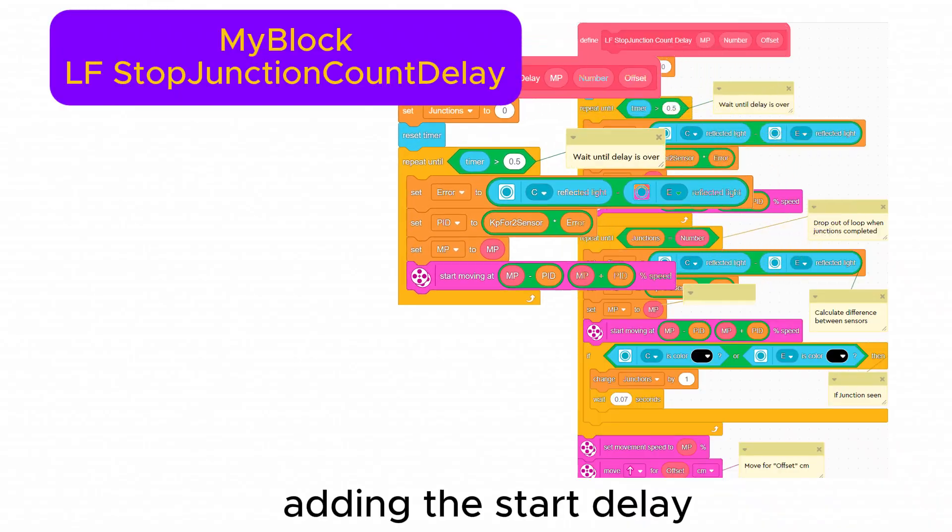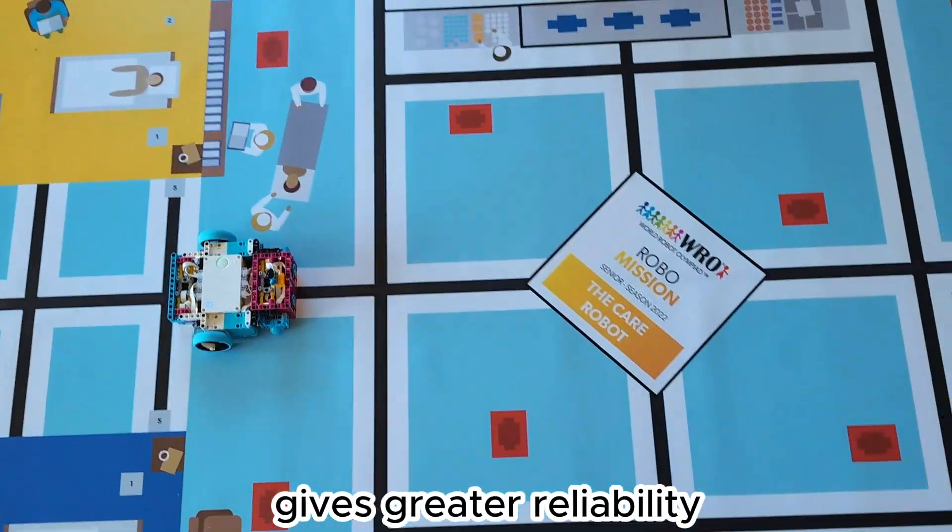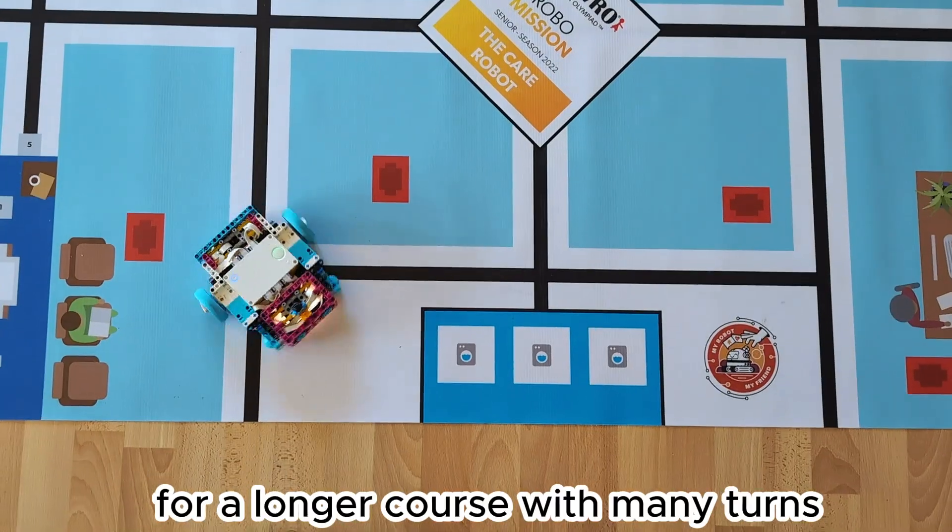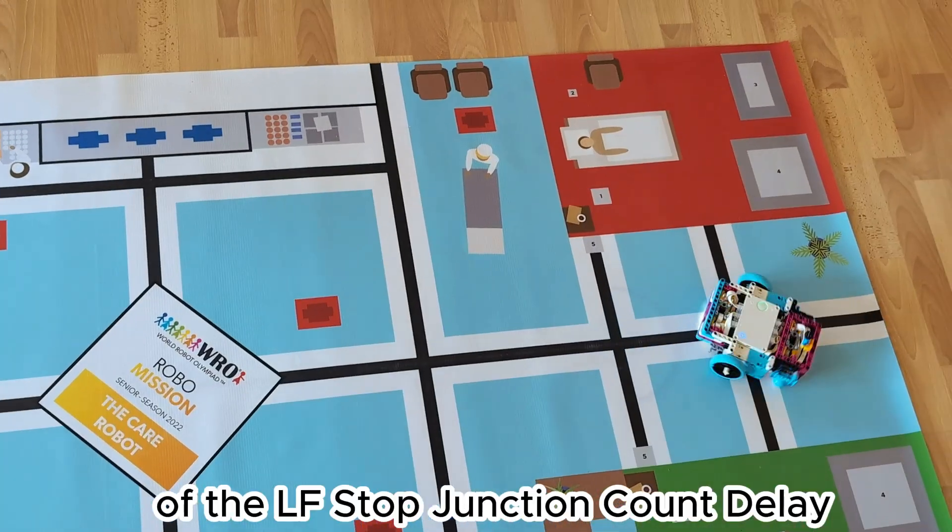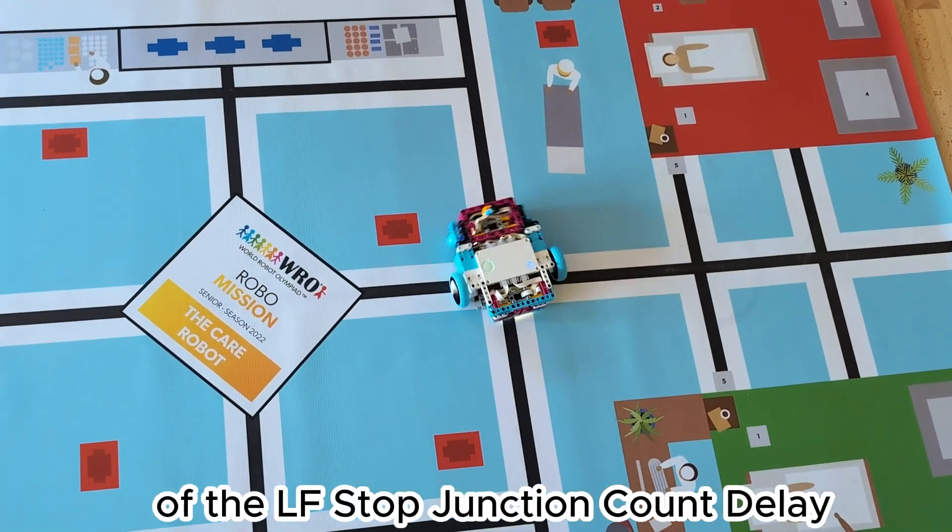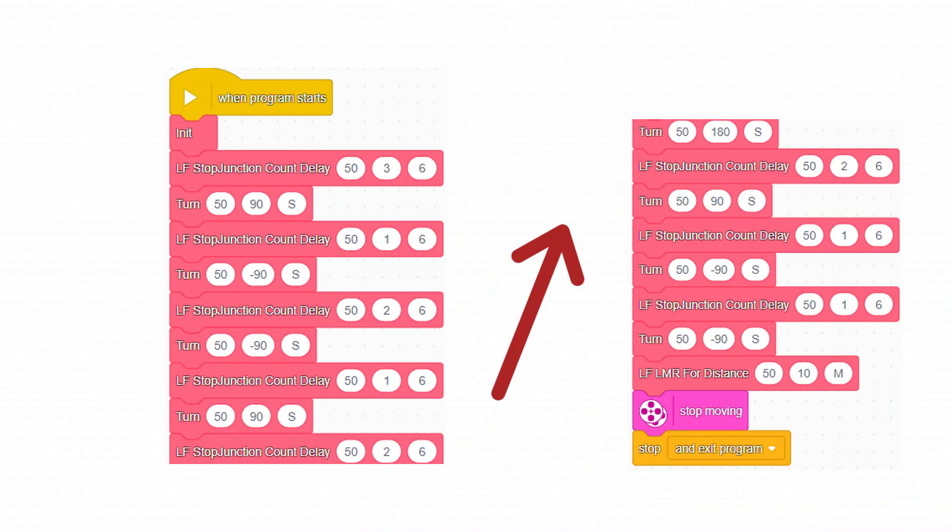Adding the start delay to give the line follower time to get on the line gives greater reliability for a longer course with many turns. Here we use a combination of the LF stop junction count delay my block and the turn my block. This is the program for the full course.